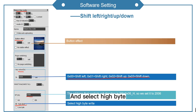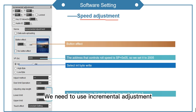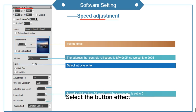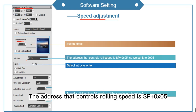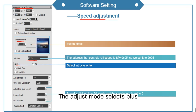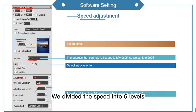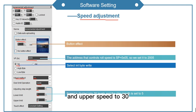And select high byte. For speed adjustment, we need to use incremental adjustment. Select the button effect. The address that controls rolling speed is SP plus 05, so we set the VP address to 2005. Select int byte. The adjust mode selects plus. The over limit operation selects circle mode so that the operation can continue to loop. We divided the speed into 6 levels, with step length set to 5, lower speed to 1, and upper speed to 30.